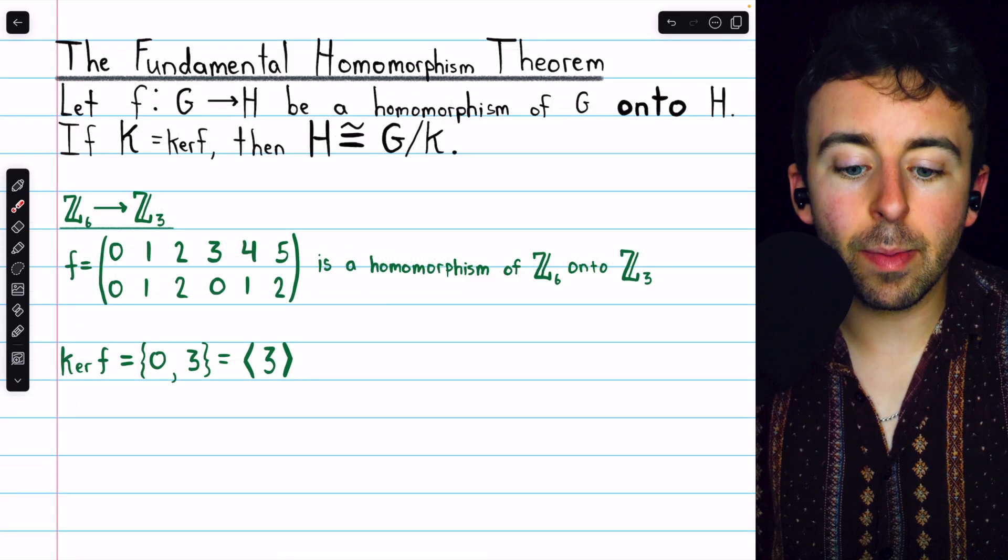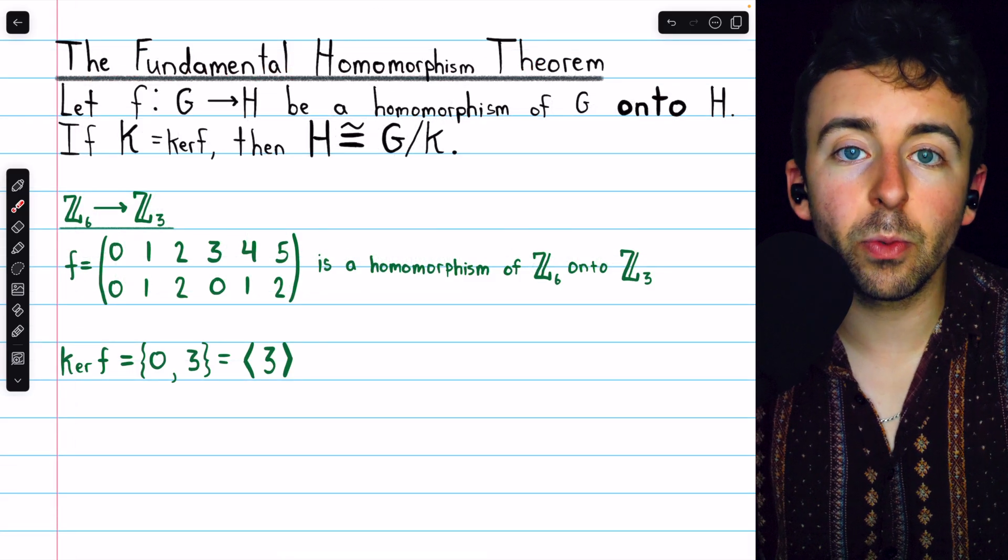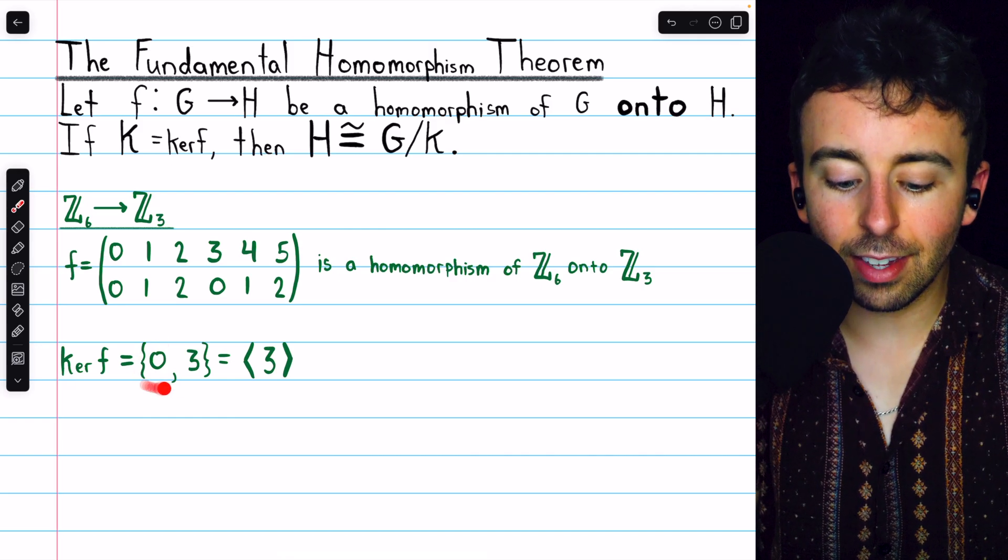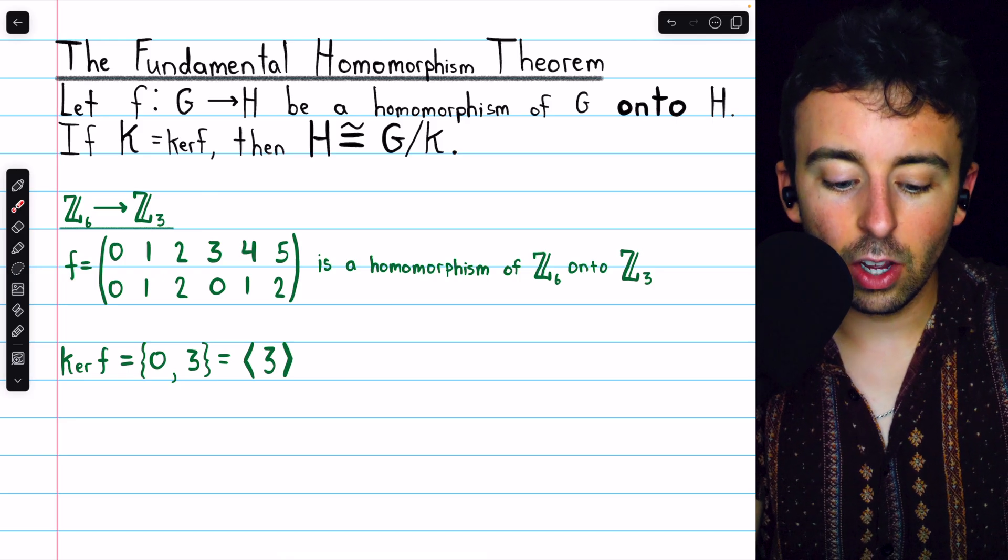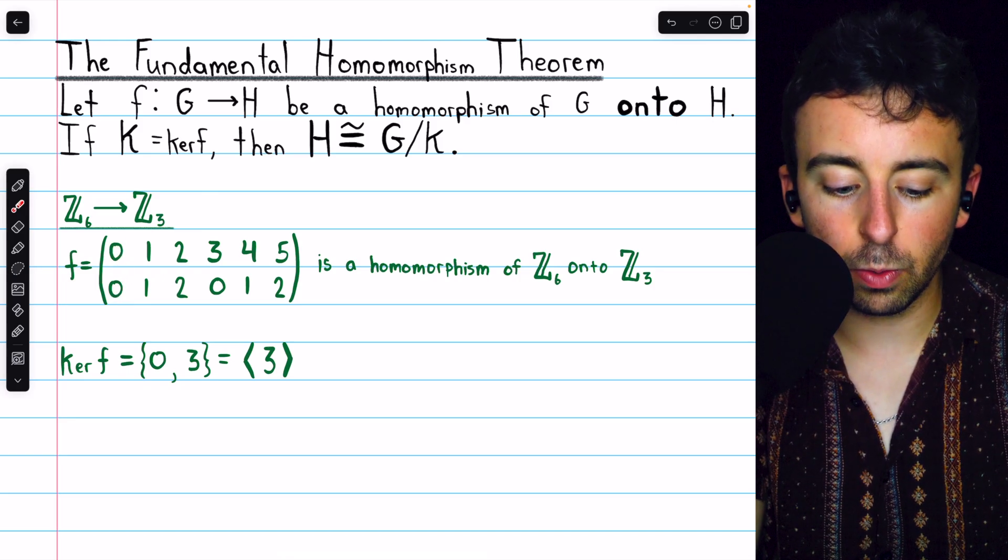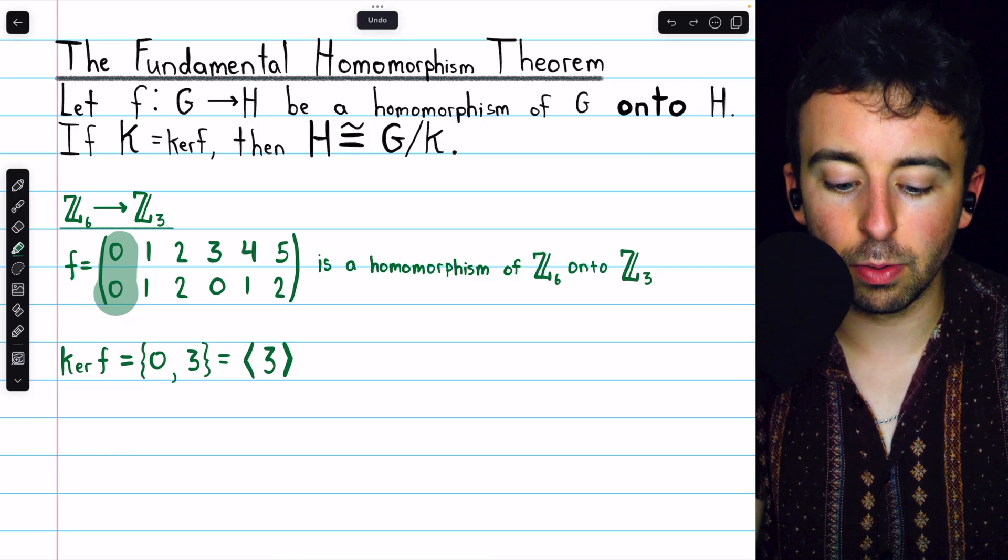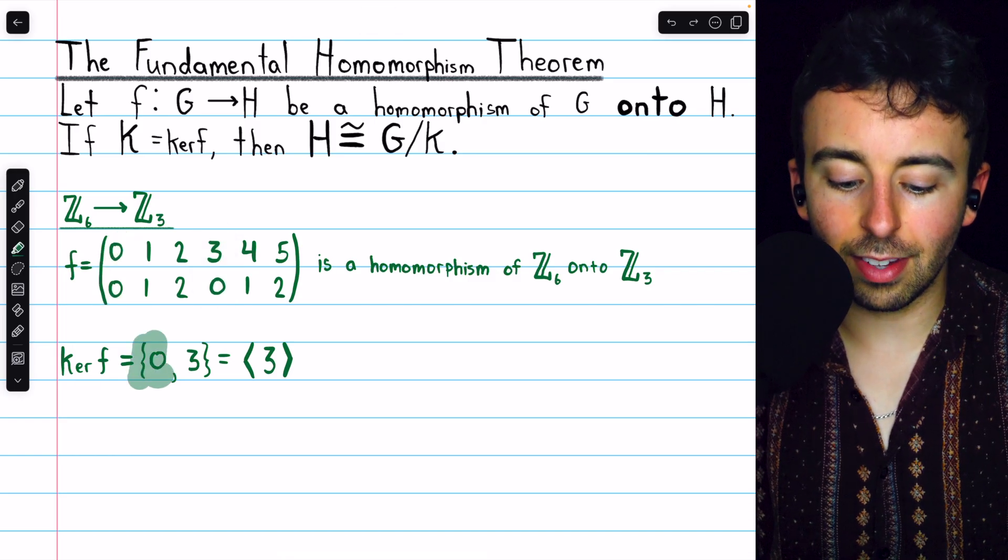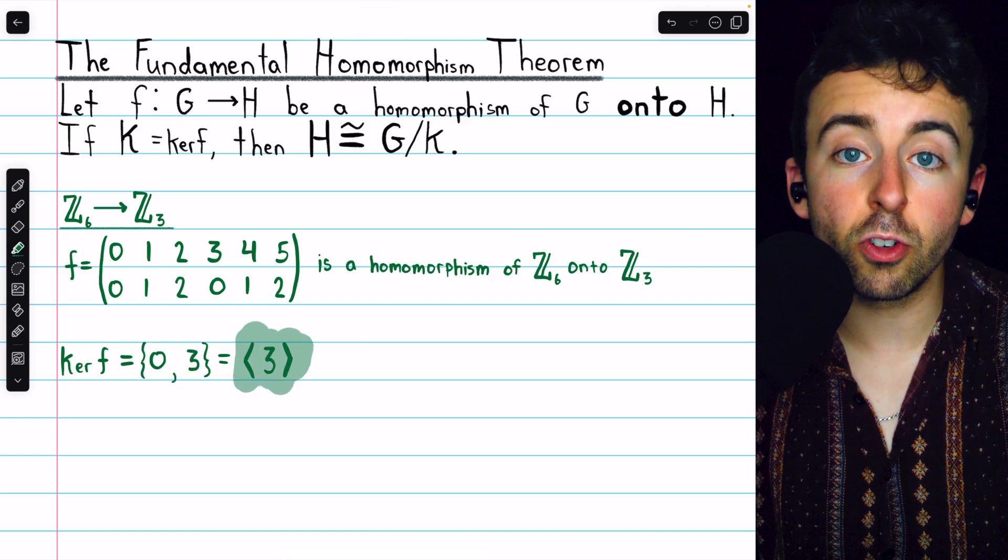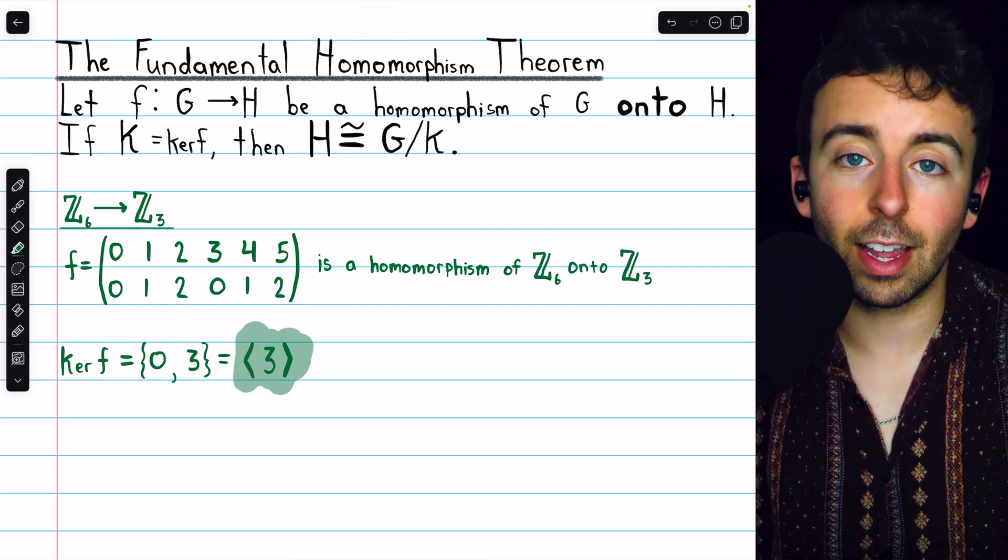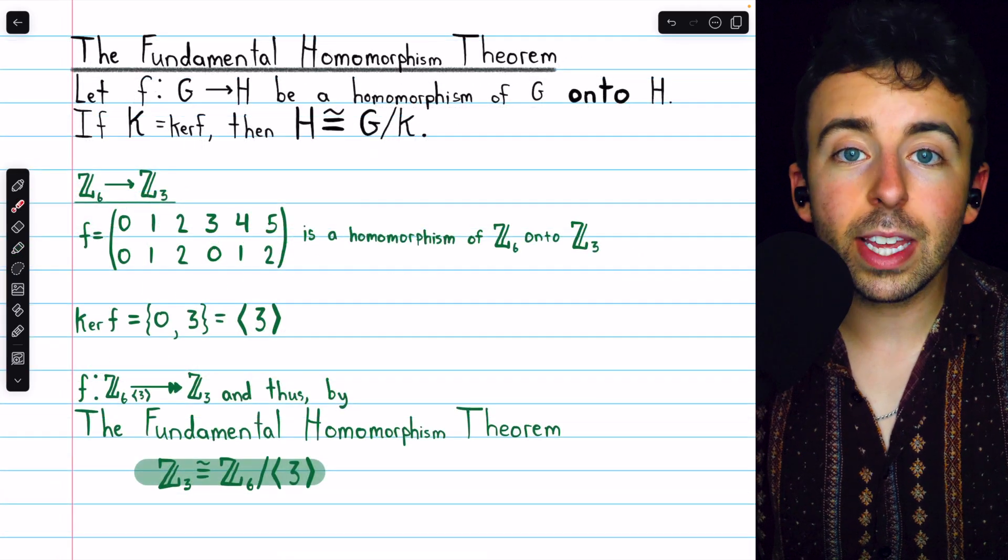Where we have a homomorphic image, we can apply the fundamental homomorphism theorem, but it's important that we identify the kernel. The kernel is the set of elements that the homomorphism takes to the identity. We see that is 0, which it maps to the identity, and 3, which it also maps to the identity. So the kernel of this homomorphism is the set containing 0 and 3, which happens to be the cyclic subgroup generated by 3. This is a normal subgroup of the domain Z6, and so we can apply the theorem.